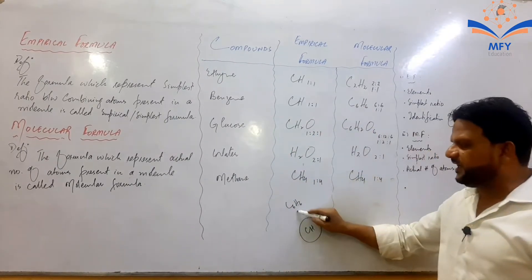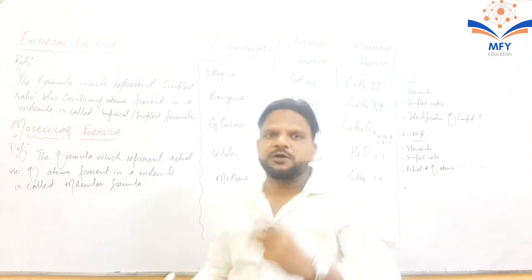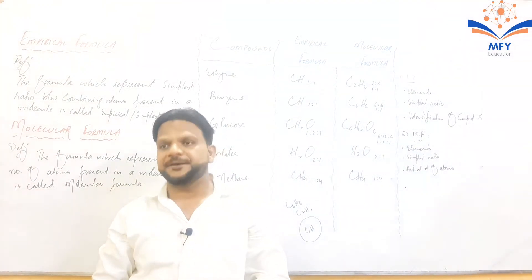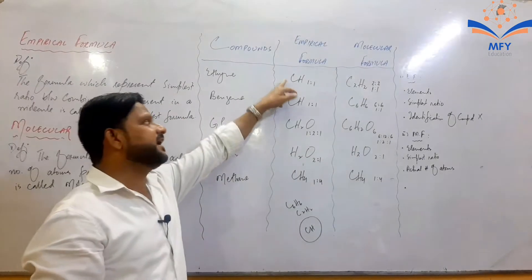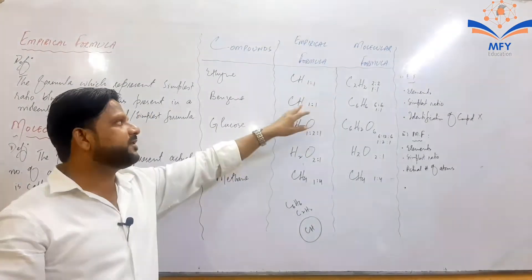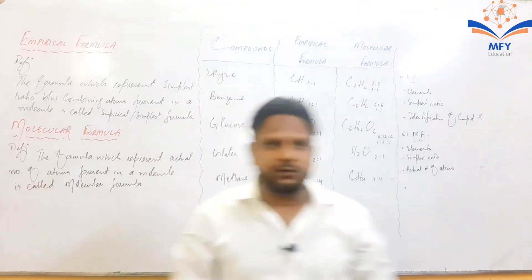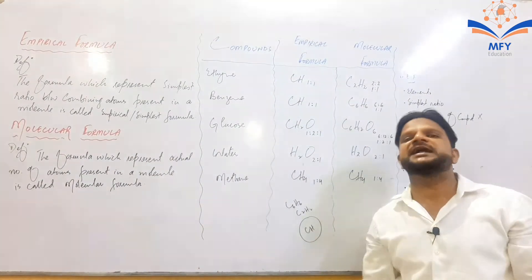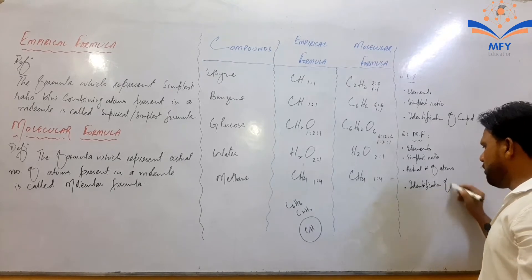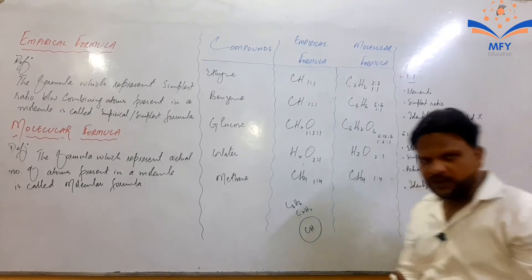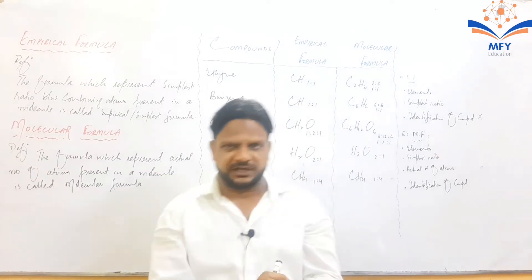اس کا مطلب جب ہم molecular formula لکھتے ہیں تو فوراً بتا سکتے ہیں کہ یہ ایتھائین کا ہے یا benzene کا — جبکہ empirical formula لکھنے پر سوچنا پڑتا تھا۔ By using empirical formula ہم compound کی identification نہیں کر سکتے، لیکن by using molecular formula we can easily identify the molecule or compound. Identification of compound and molecule by using molecular formula is possible.